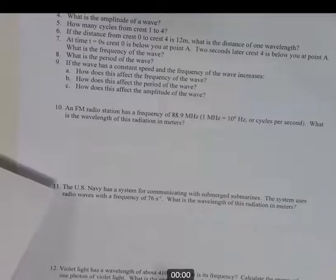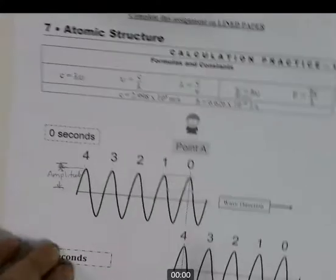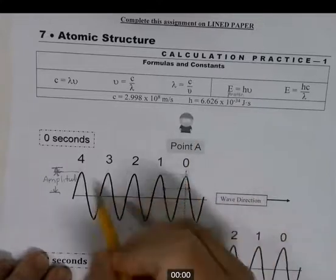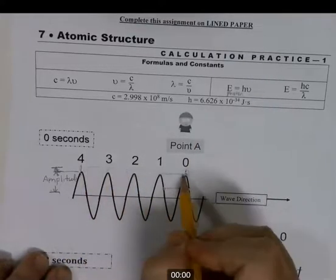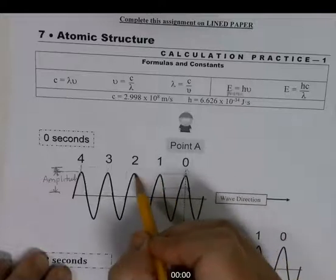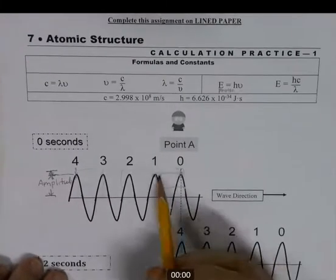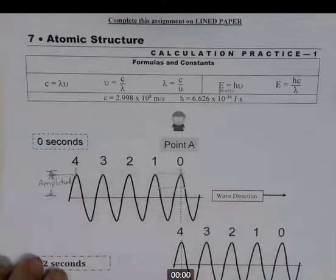If the distance from crest zero to crest four is 12 meters, what is one wavelength? It's simple division. You have four wavelengths spanning 12 meters, so 12 divided by 4 equals 3 meters per wavelength. Three, six, nine, twelve — checks out.